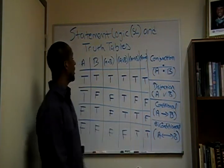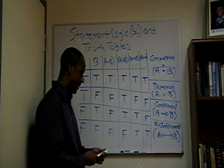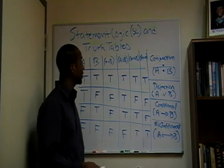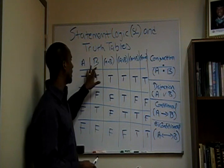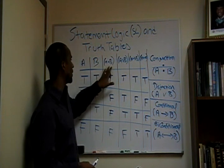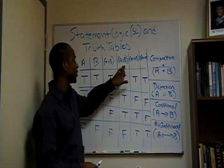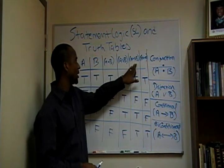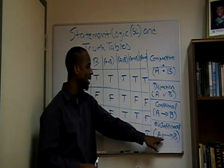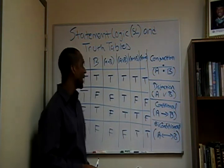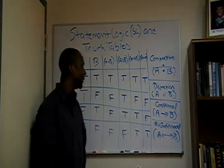So this is the fully filled basic truth table. We have two variables. We have the conjunct, we have the disjunct, we have the conditional — this is probably too small, I apologize — but it's the biconditional. And we have the table completely filled out.